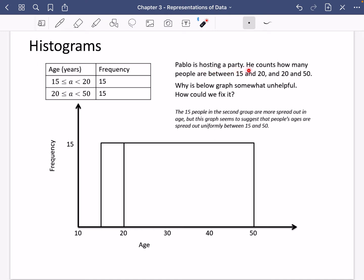It says here that Pablo is hosting a party. He counts how many people are between 15 and 20, and there's 15 people here, and how many people are between 20 and 50, like this. Why is the below graph somewhat unhelpful, and how could we fix it?